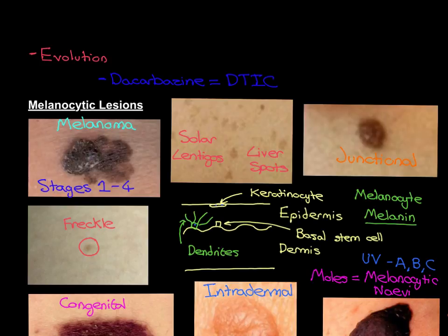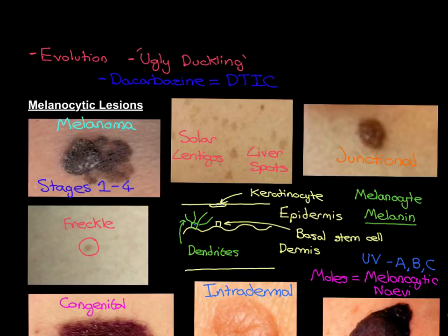The other very useful rule is the ugly duckling rule. When people talk about melanoma, they often talk about A, B, C, D, E, where each letter stands for a characteristic of melanoma — and the E in that acronym is evolution, i.e. changing. However, I think the other parts of that acronym — A, B, C, D — can easily be summarised into the ugly duckling rule, so I actually prefer the ugly duckling rule over the ABCDE rule.